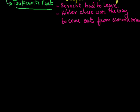Hitler chose war as the way to come out of the economic crisis — attacking new countries and taking all their property and resources. This is how he tried to revive Germany's economy by capturing the prosperous and mineral-rich areas of different countries. And this is how Hitler invaded Poland in the year 1939, which marks the beginning of the Second World War.